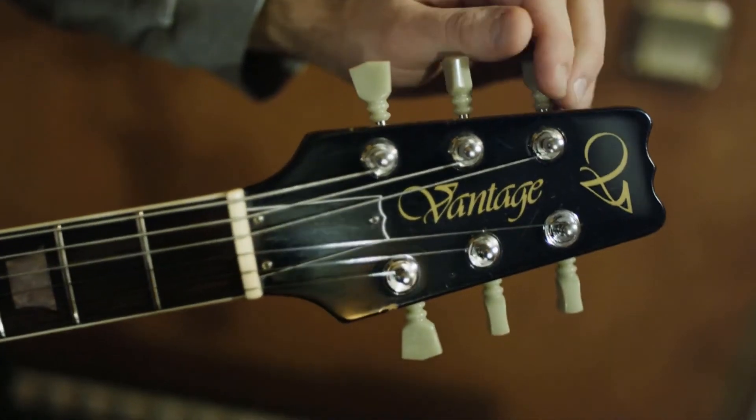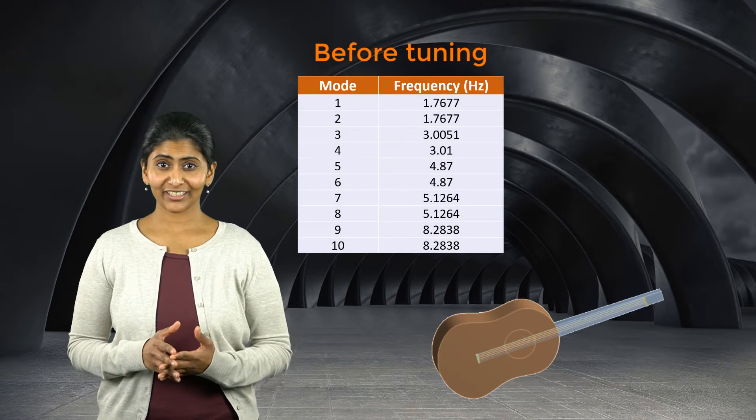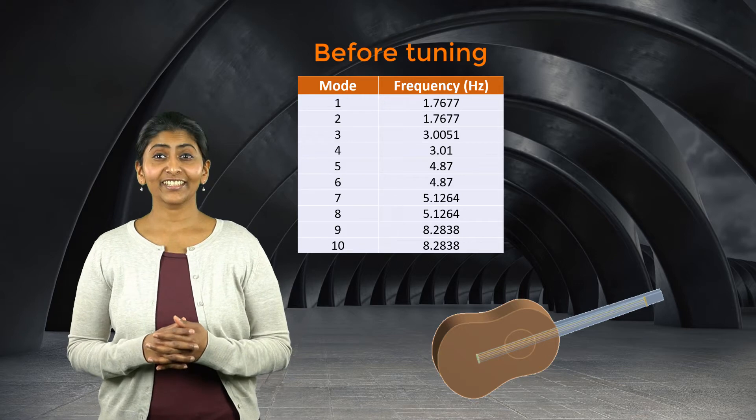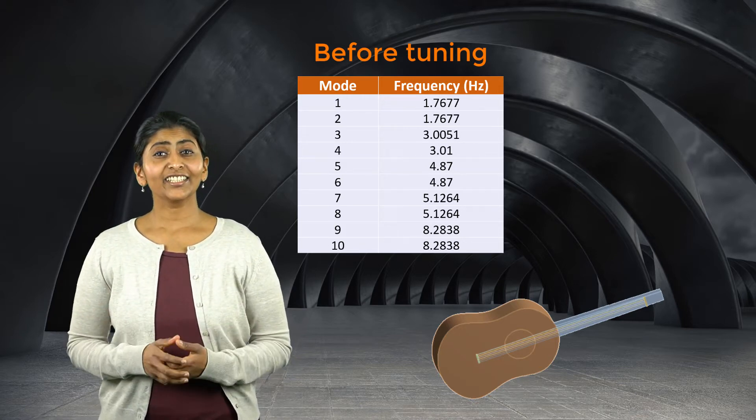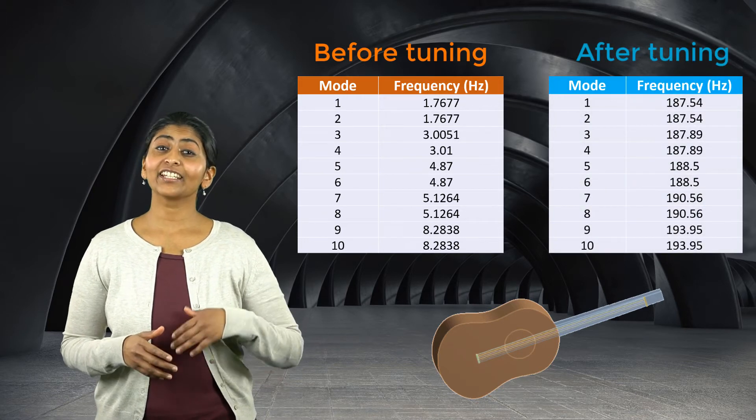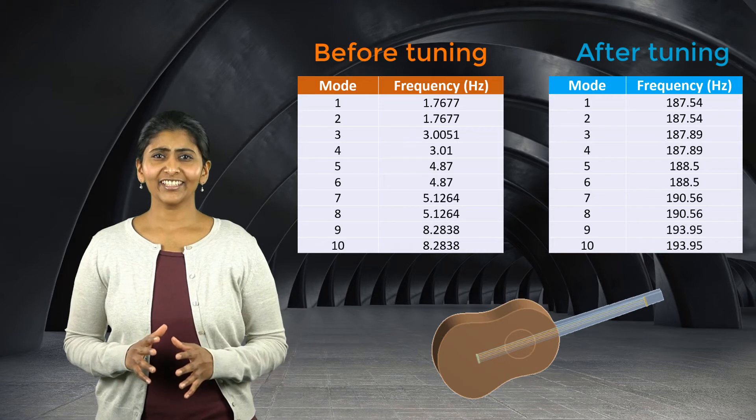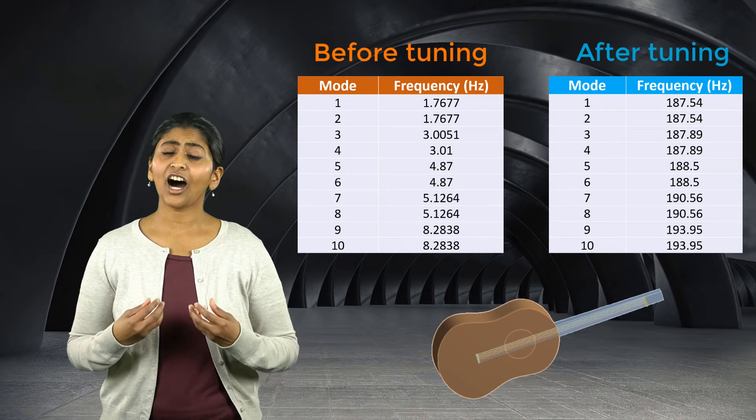Let's revisit the example of guitar tuning and calculate its natural frequencies before and after tuning. Before tuning, here are the first 10 natural frequencies of the system. Now, if we introduce some stress in the strings by stretching them during tuning, here are the same 10 frequencies calculated after introducing pre-stress. It's very clear that the strings are vibrating at a much larger frequency after tuning.